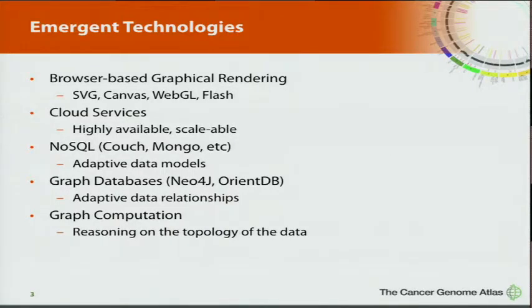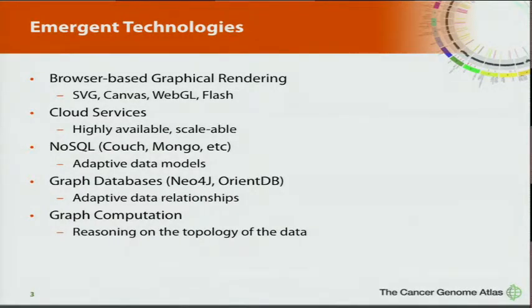There are also cloud services that allow you to scale up your computation and data management. And then new types of databases called NoSQL, which allow us to have adaptive data models. Often in TCGA a new analysis is born and a new data model is created, and it's hard in the classical sense with SQL to integrate those models quickly — NoSQL technologies allow us to do that on the fly. There are also graph databases, which allow us to be adaptive about the types of relationships we declare exist between the data. Graph computation is a new direction where you can reason upon data structured like a graph, and do this in a distributed manner across large clusters of computers.